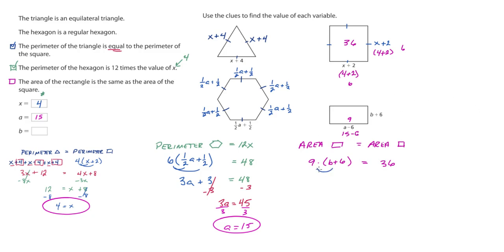We'll now distribute the two. So you get 9 times b is 9b plus 9 times 6 is 54. And this equals 36. We would then subtract the constant, 54. You get 9b equals negative 18. Now, we didn't have to distribute here.